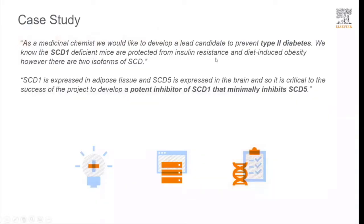As a chemist, we'd like to develop a lead candidate to help prevent type 2 diabetes, and we think that SCD1 is a good target because SCD1-deficient mice are protected from insulin resistance and diet-induced obesity. However, there are two isoforms of SCD that are differentially expressed. SCD1 is expressed in adipose tissue, while SCD5 is expressed in the brain.